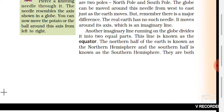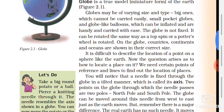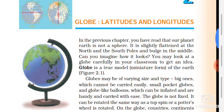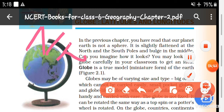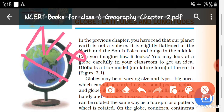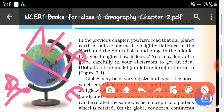The northern half of the Earth is known as the northern hemisphere, and the southern half is known as the southern hemisphere. The equator divides it exactly — the upper portion is the northern hemisphere and the lower portion is the southern hemisphere.